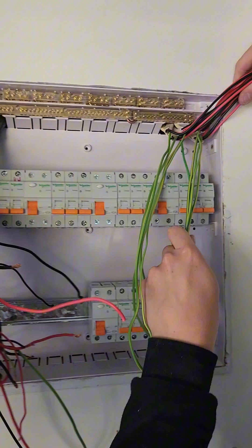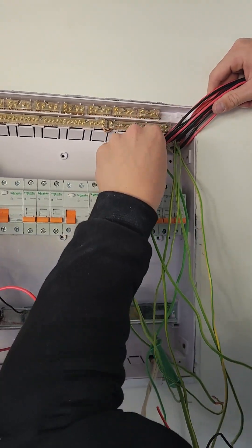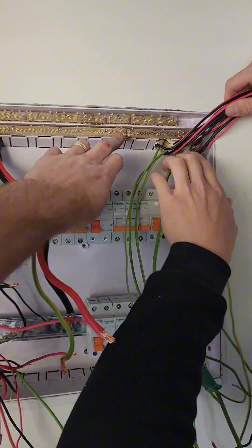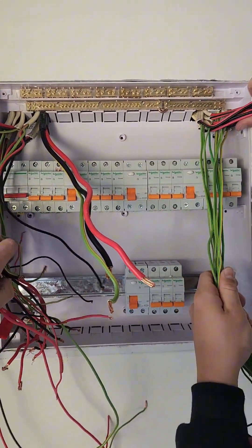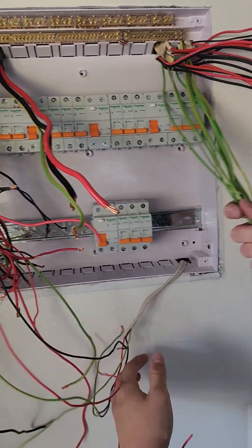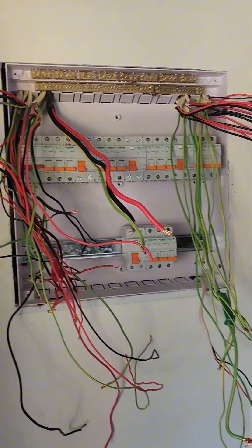We've got them all stripped up nicely to their length. Now we're just separating out the earths, we'll put all the earths into the earth bar here first and then we will work on the neutrals and phases. See Snipey's got them all out there, we can cut them all to length and pop them in holes.